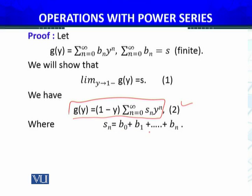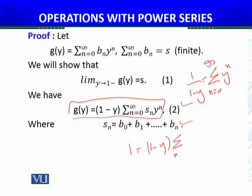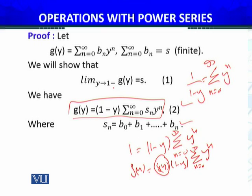G(y) equals (1 minus y) times the summation from N equals 0 to infinity of S_N times y^N, where S_N equals B₀ plus B₁ plus ... plus B_N. We use the fact that 1 over (1 minus y) equals the summation from N equals 0 to infinity of y^N, and multiplying both sides: (1 minus y) times the summation of y^N.